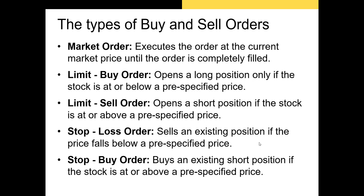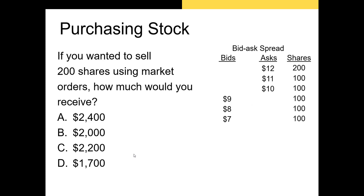Stop buy orders are used when you suspect the price of shares will increase rapidly — you tell your broker to buy those shares if the stock reaches a certain price. For example, if you want to sell 200 shares using a market order, you want to sell for as much as you can get. If you could sell 100 shares at $9.00 and the next 100 shares at $8.00, the maximum you'd receive is (100 × $9) + (100 × $8) = $1,700.